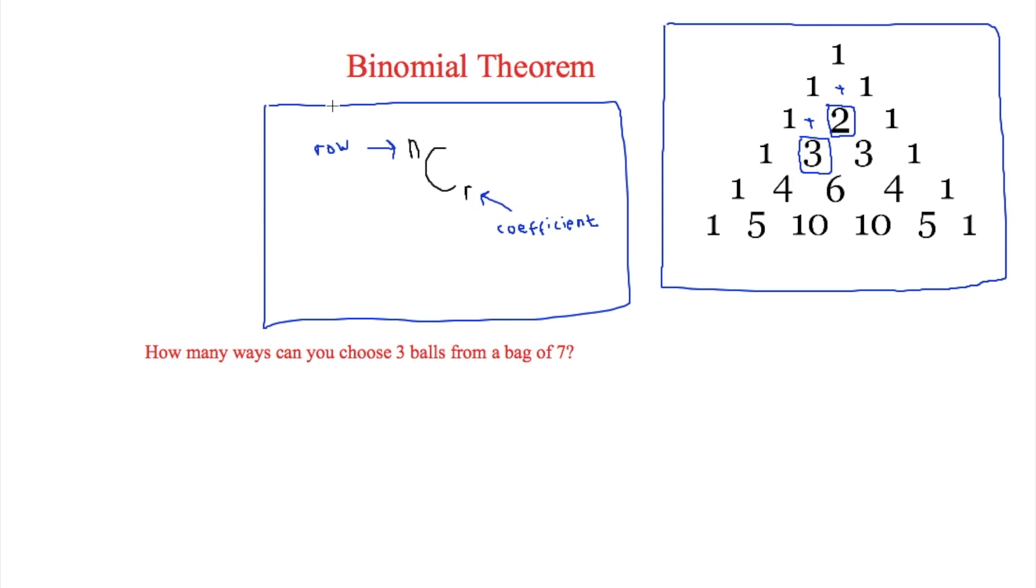Now this can be used to find a coefficient. So for example if we were looking at this fifth row here and we wanted to find what the second one was, which is here, then what we would write is we'd write 5 and then we would do shift divide and then this one counts as 0. The first one always counts as 0.